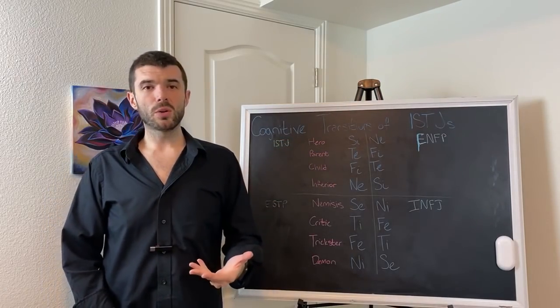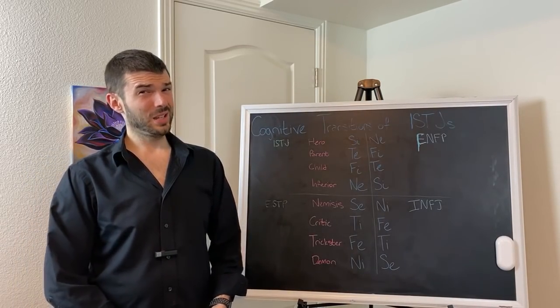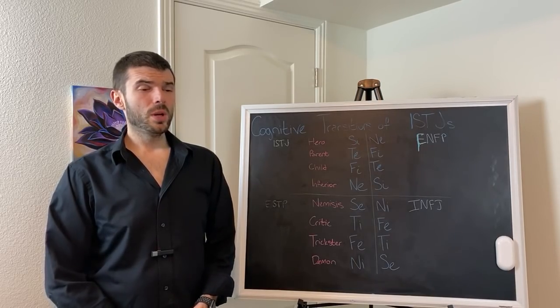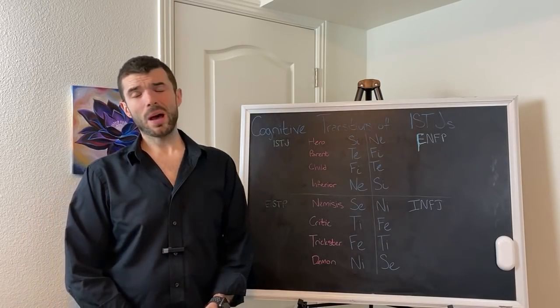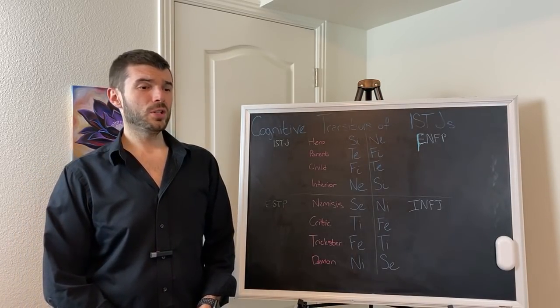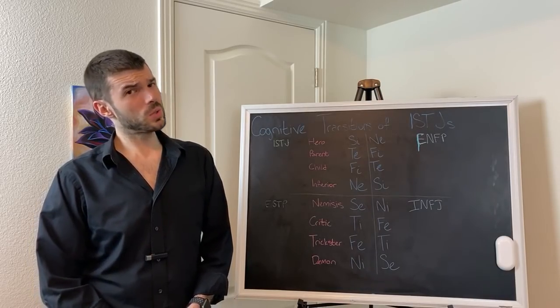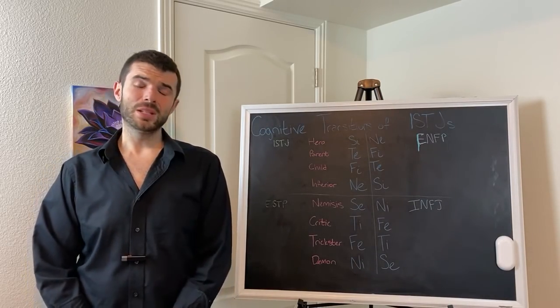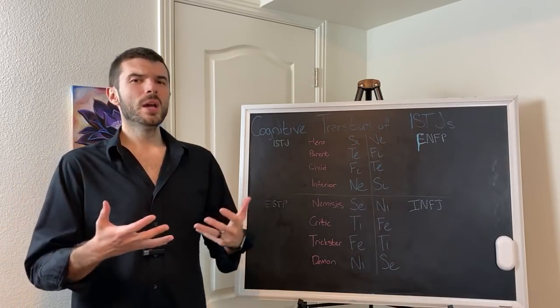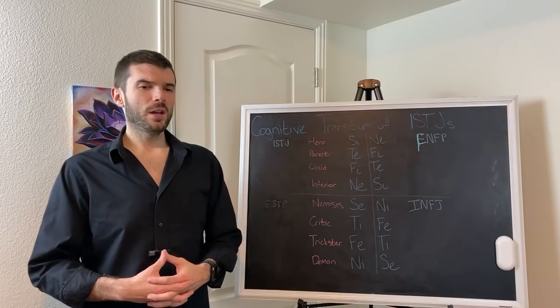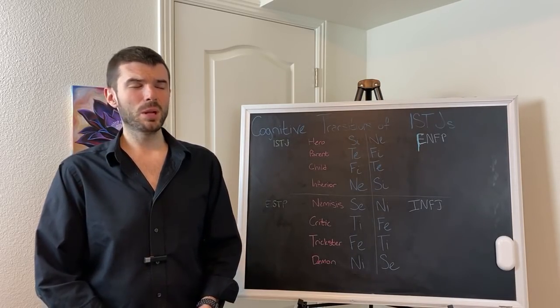Because of that, they end up not going very far because they are irresponsible. What they want to do is learn that sense of responsibility. Once they have access to their ISTJ ego and start developing the other sides of their mind, the hero function forms first, the child function forms second.